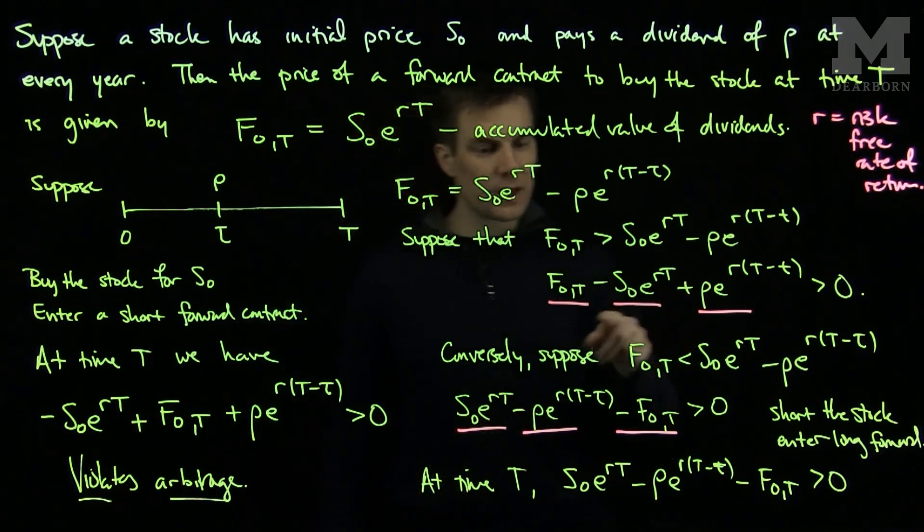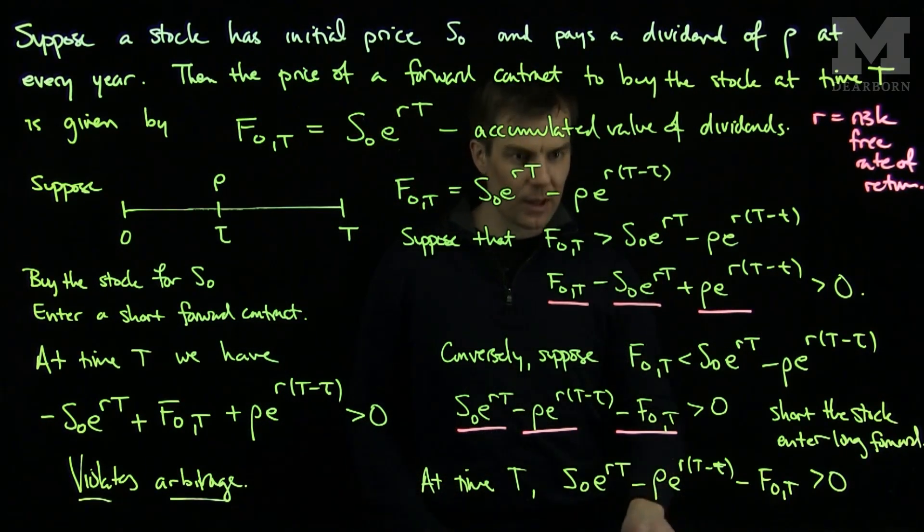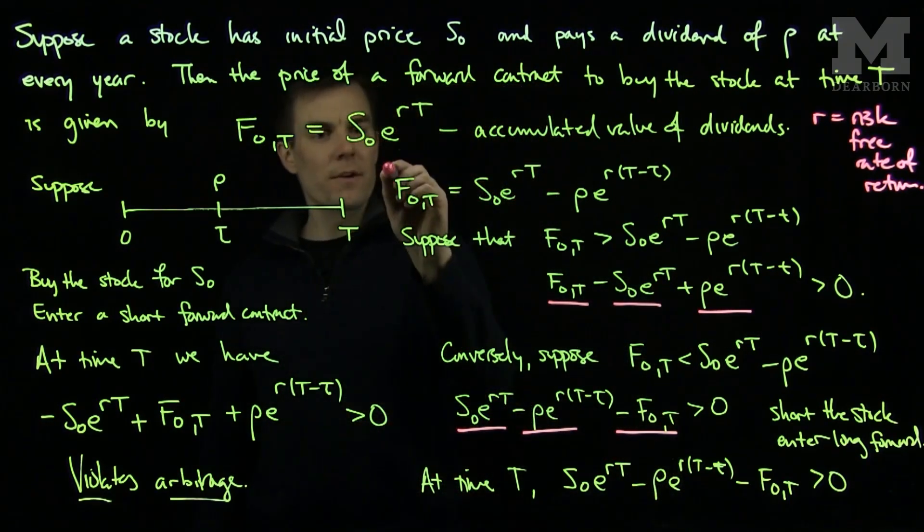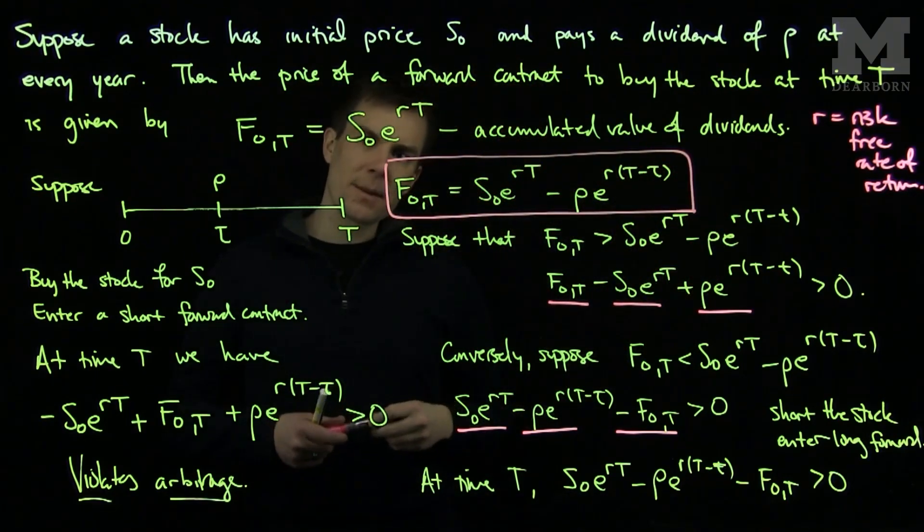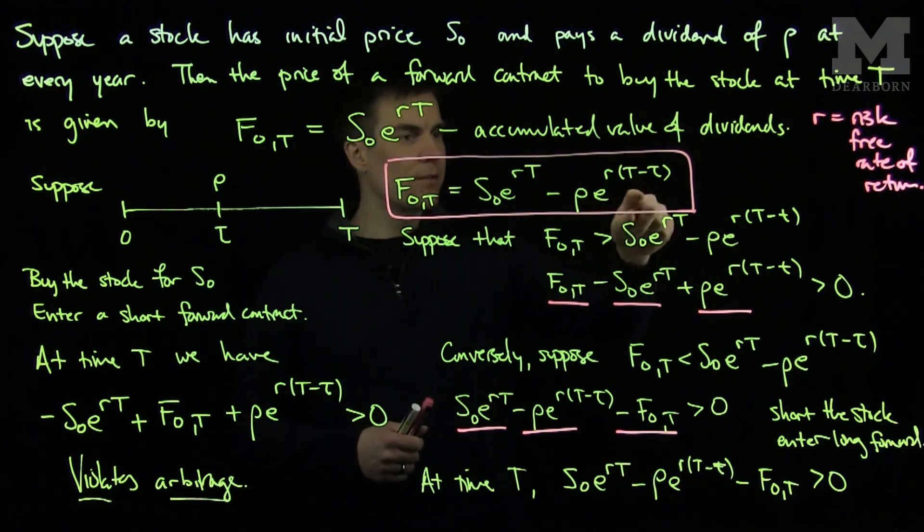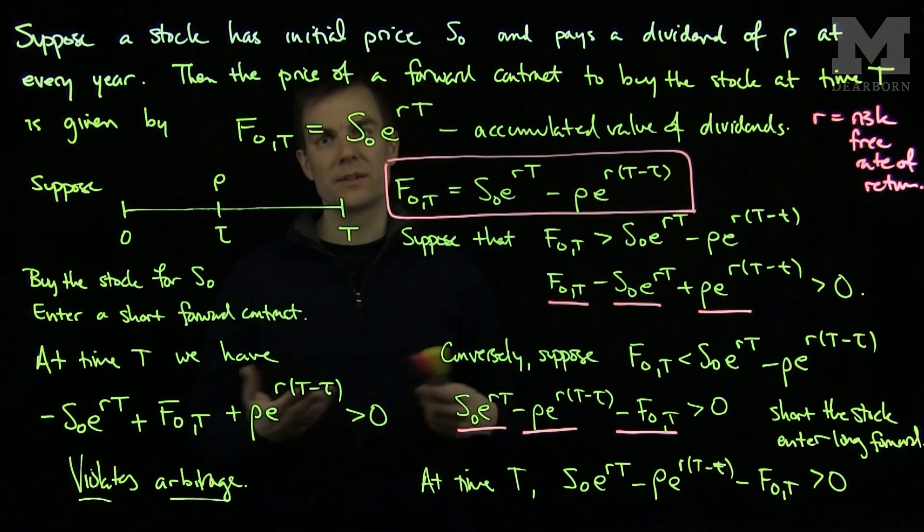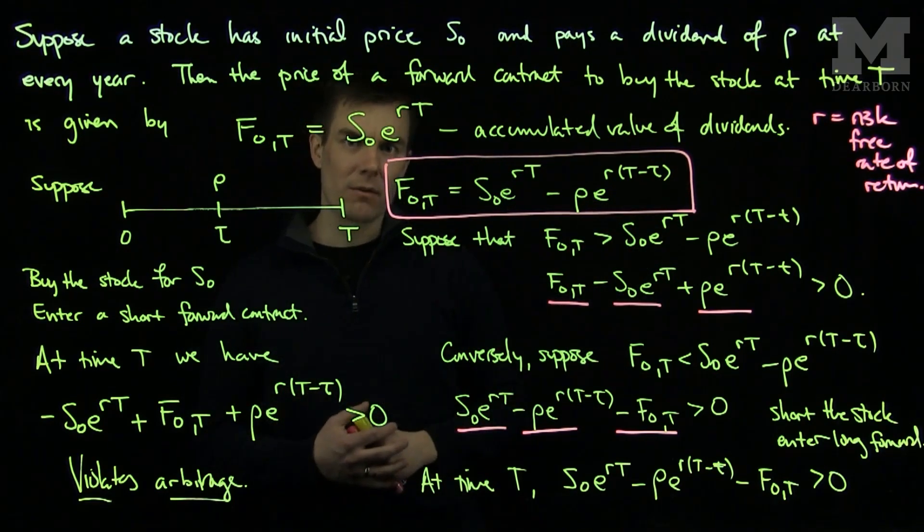So, both inequalities, where this is strictly bigger than zero and strictly less than zero, are false. We have figured out the formula to correctly price a forward contract with one discrete dividend. And exactly the same reasoning allows us to compute this if there are more than one dividend in the stream or a continuous stream of dividends. Thank you very much.